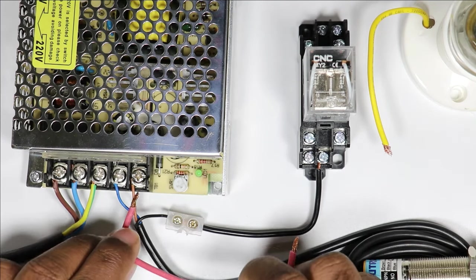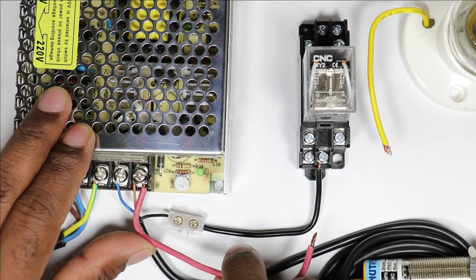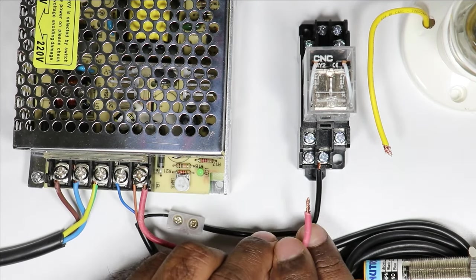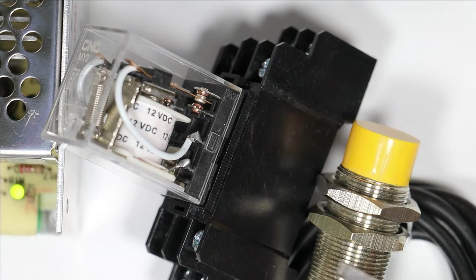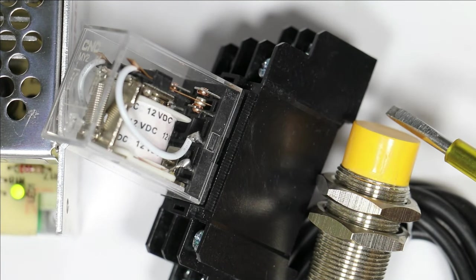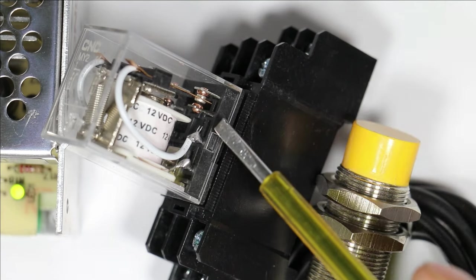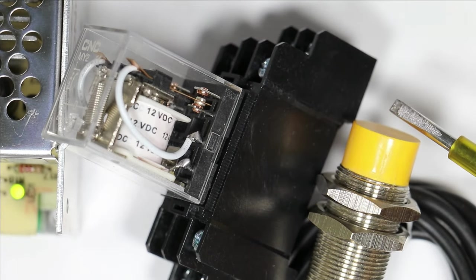Now positive power supply is required. What we will do is connect a piece of wire from positive terminal of SMPS, and the other end of wire must be connected to 14 number terminal of relay. After this we can operate this relay with the help of this sensor. As you can see, contact is changing whenever an object comes close to sensor.